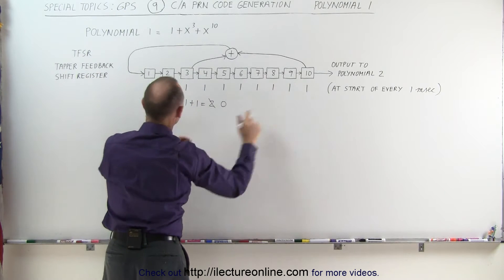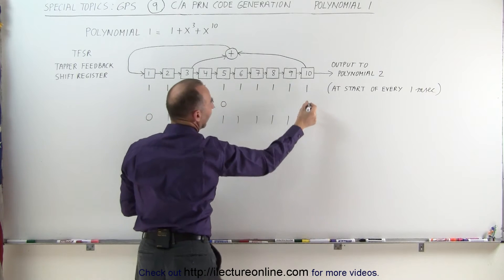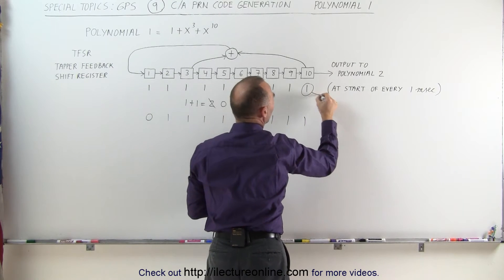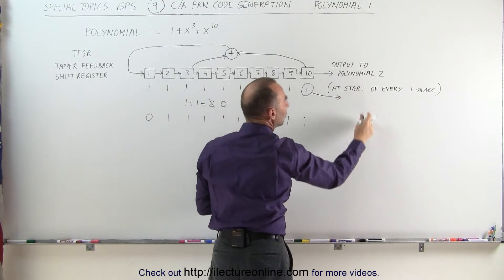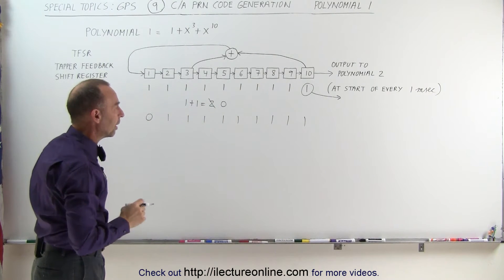This becomes 0, everything else moves over 1, 1, 1, 1, 1, 1. And the last one goes off to polynomial 2 which gets summed with some other bits or some other values in that particular polynomial.